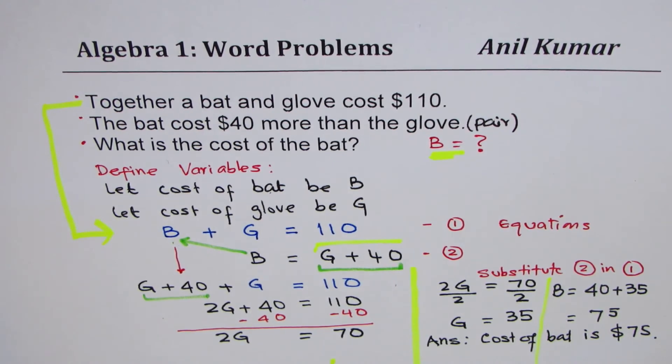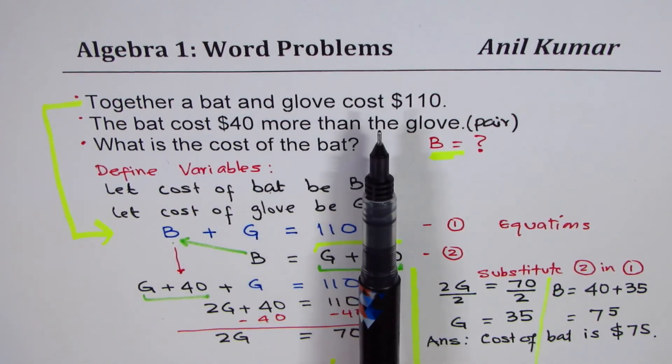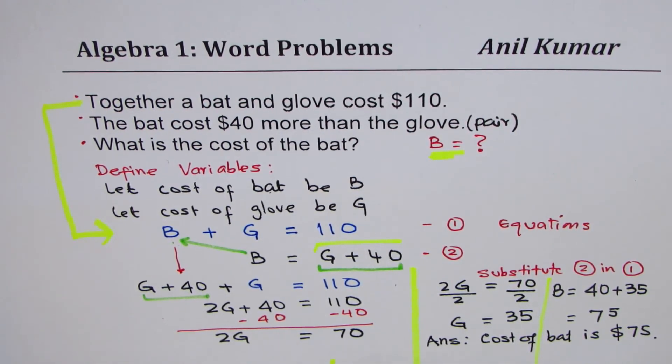Now, it took me time to explain, but you can see, in a minute, you can do it. As soon as you read, you define your variables, make your statements as equations. Do substitution, as we did. Sometimes, elimination. We'll take some examples with that also later. And then solve your equation. To find what is required, write down the answer with units, as we did here. So, we found that the cost of the bat is $75. I hope that helps.